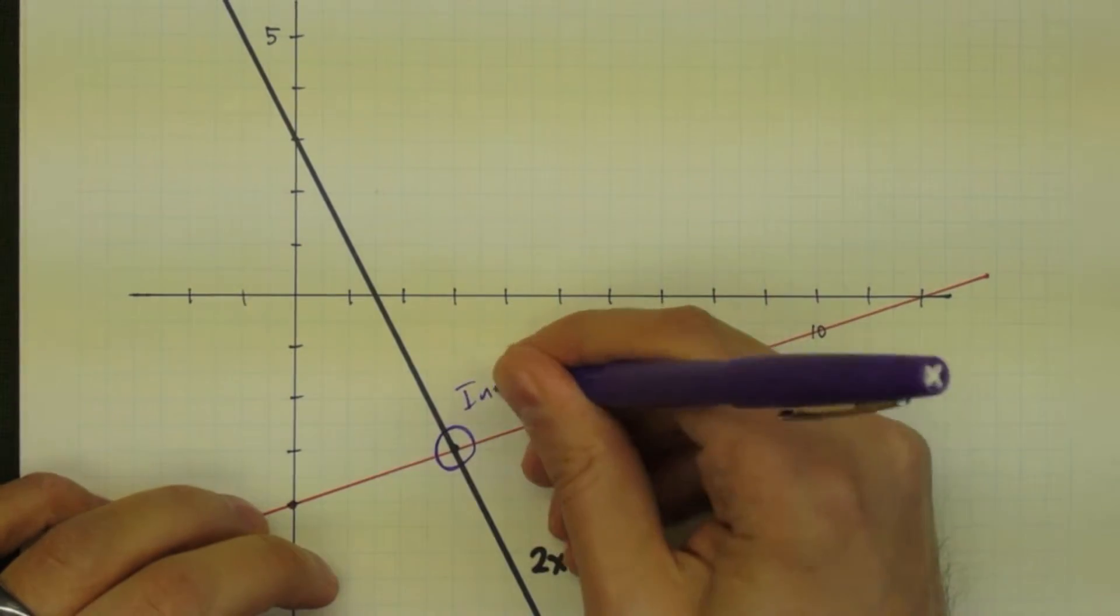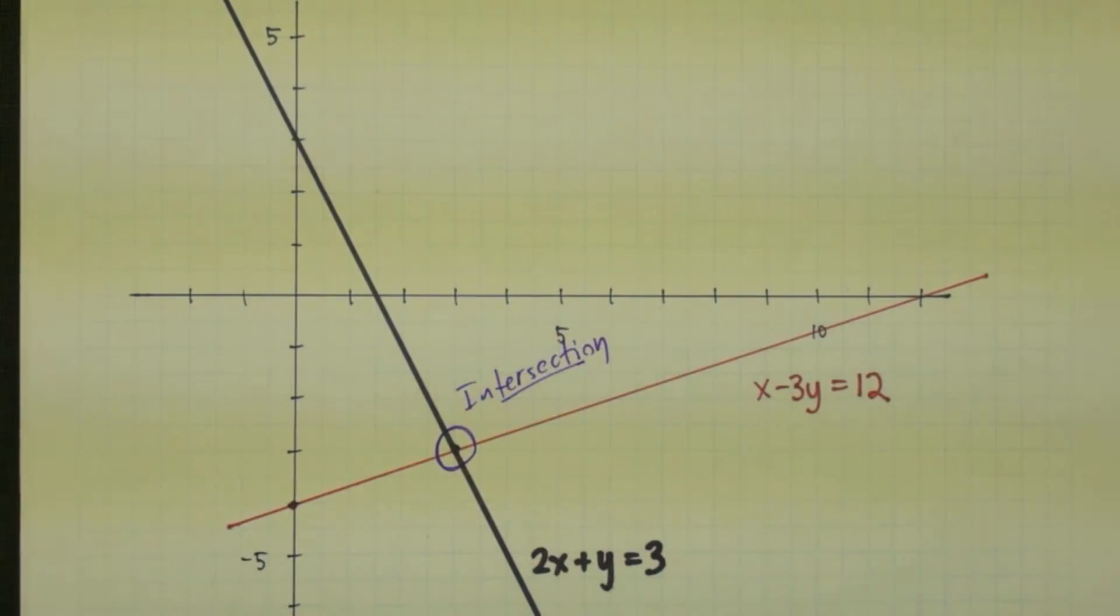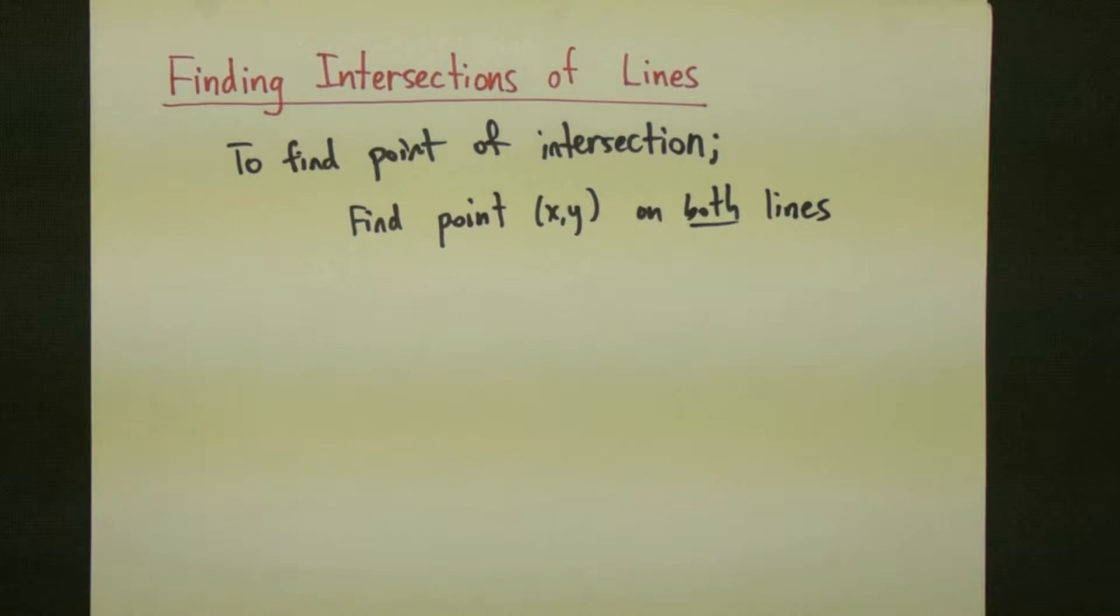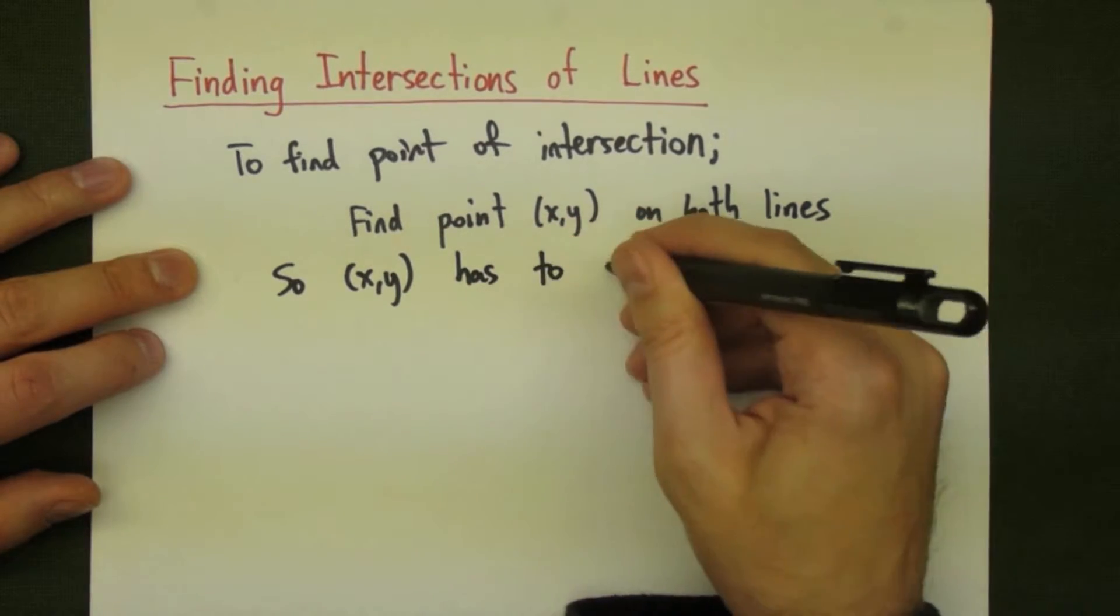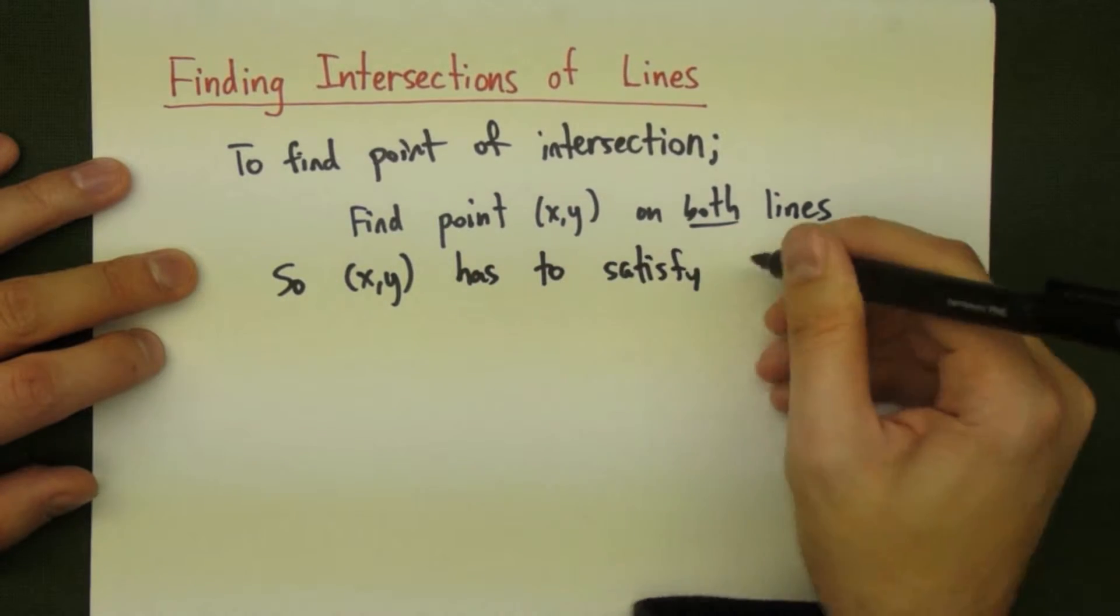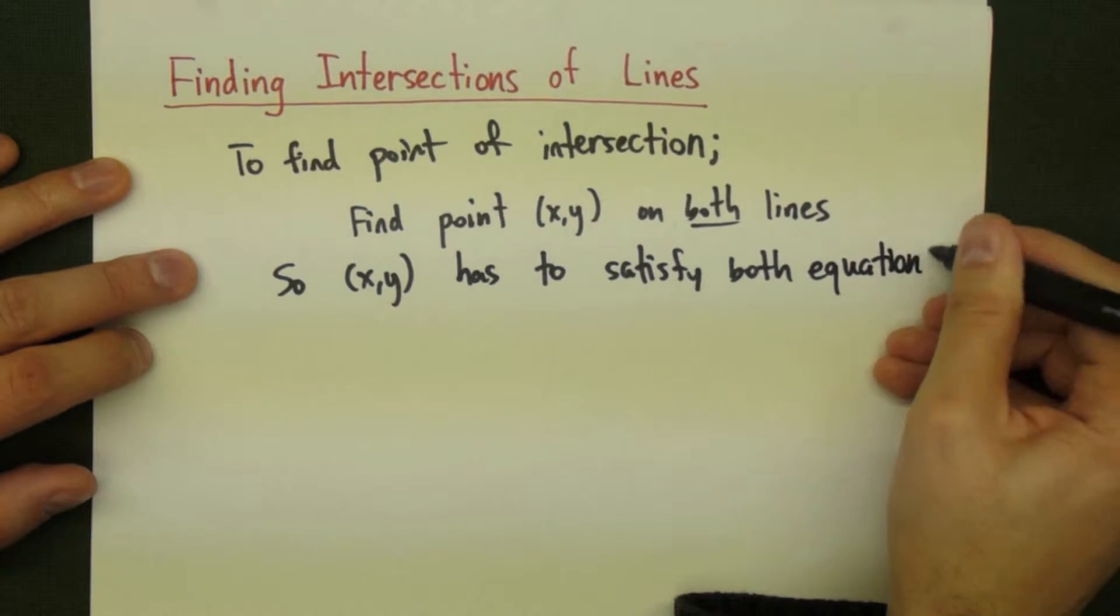Pictorially, we are looking for the x and y coordinates of this point right here. To actually find this point, we need to look for an x and y that satisfies the equations of both of the lines.